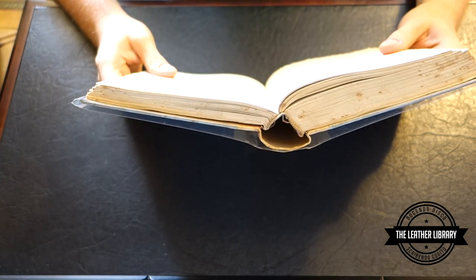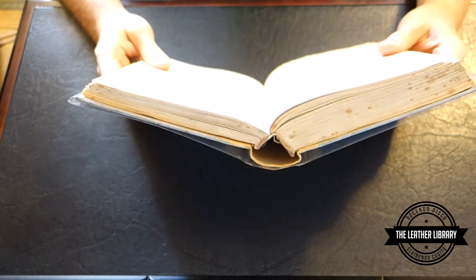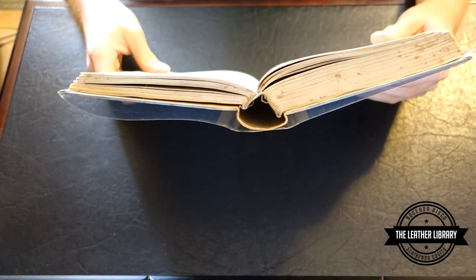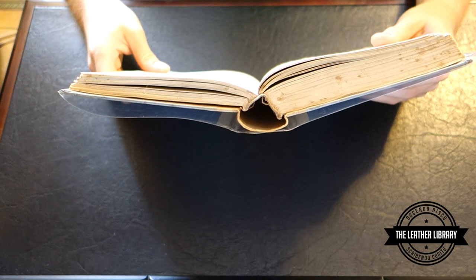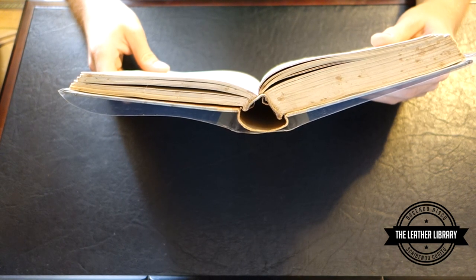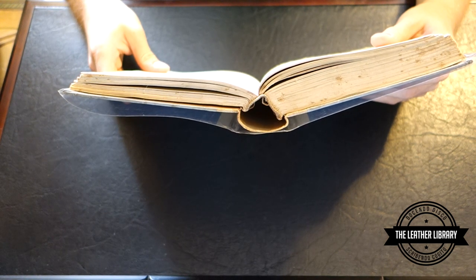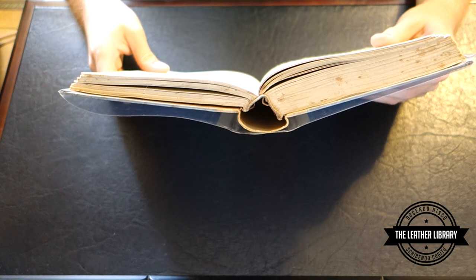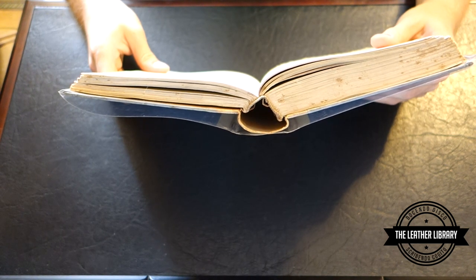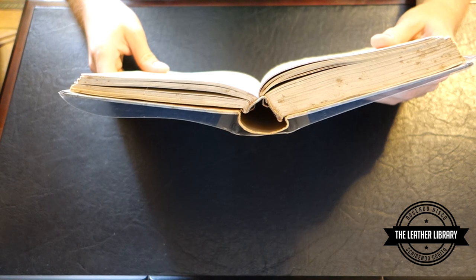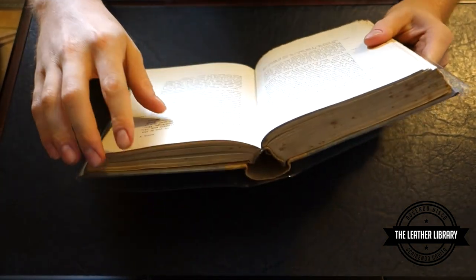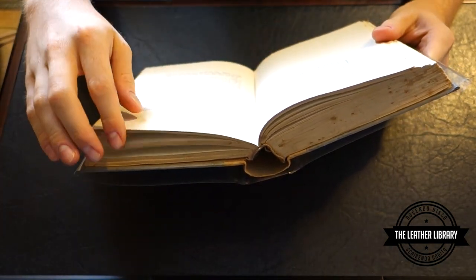Marshall, the things that do attain - by the way this is commonly called The Means to Attain a Happy Life or The Happy Life. Marshall, the things that do attain the happy life be these I find: The riches left, not got with pain, the fruitful ground, the quiet mind, the equal friend, no grudge, no strife, no charge of rule nor governance, without disease, the healthful life, the household of continuance, the mean diet, no delicate fare, true wisdom joined with simpleness, the night discharged of all care, where wine and wit may now press, the faithful wife without debate, such sleeps as may beguile the night, content with thine own, the state you wish for death, me fear his might.